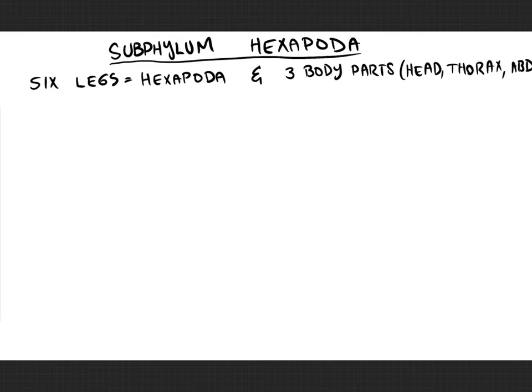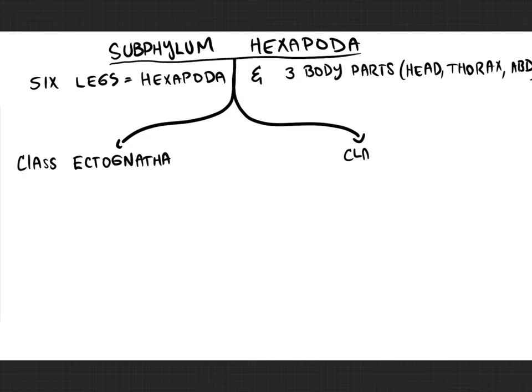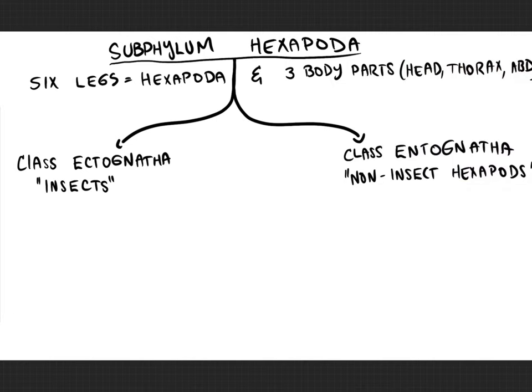Hexapods can be divided into two smaller groupings known as classes. You have the class Ectognatha, which means outside jaws, and the class Entognatha. This illustrates the power of taxonomy — you can make progressively more specific groups. The Ectognatha are your insects, and the Entognatha are your non-insect hexapods.